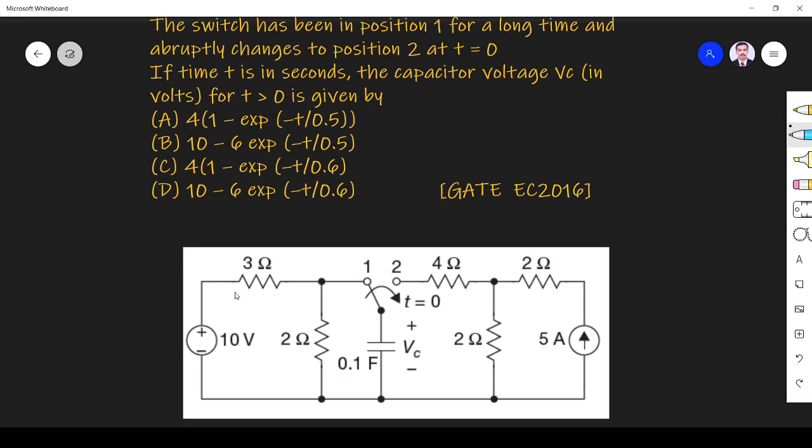the capacitor voltage Vc in volts for t greater than 0 is given by: (A) 4(1 - e^(-t/0.5)), (B) 10 - 6e^(-t/0.5), (C) 4(1 - e^(-t/0.6)), (D) 10 - 6e^(-t/0.6).